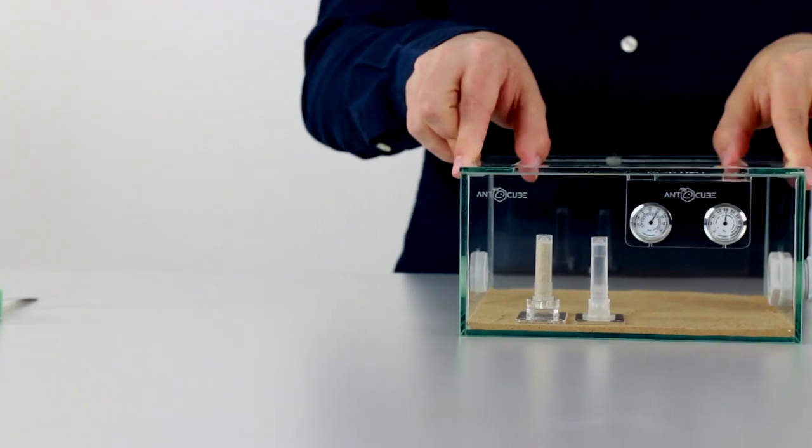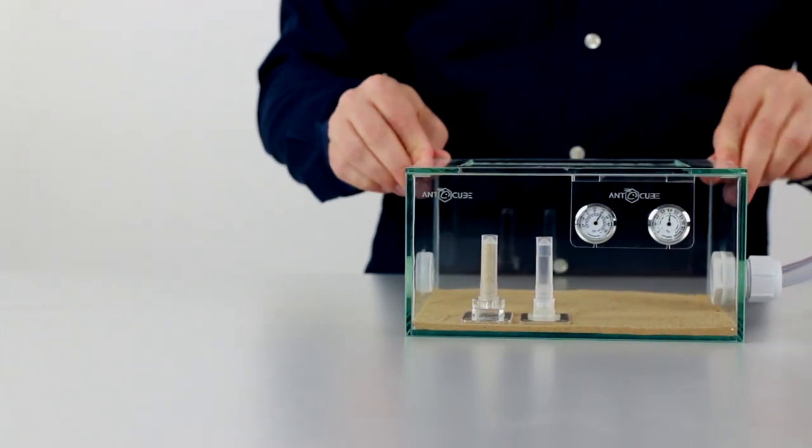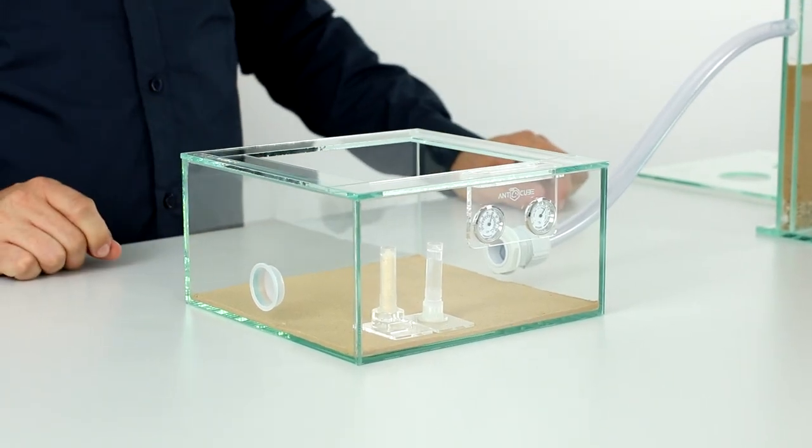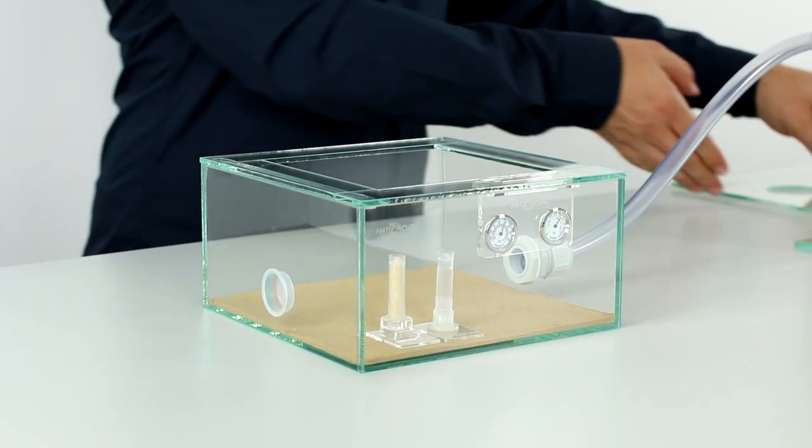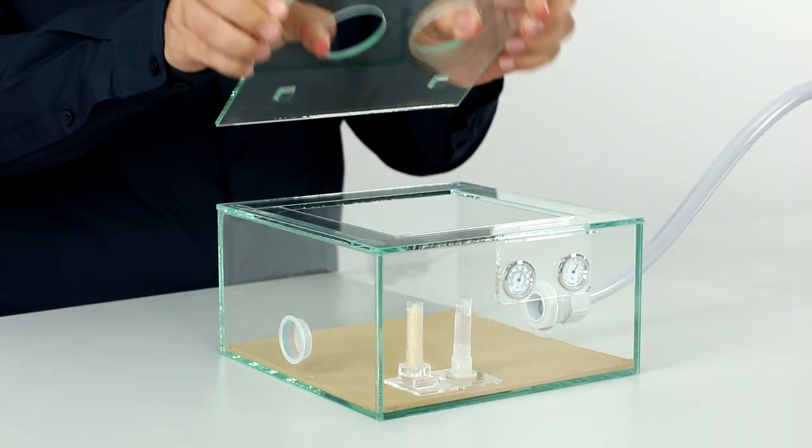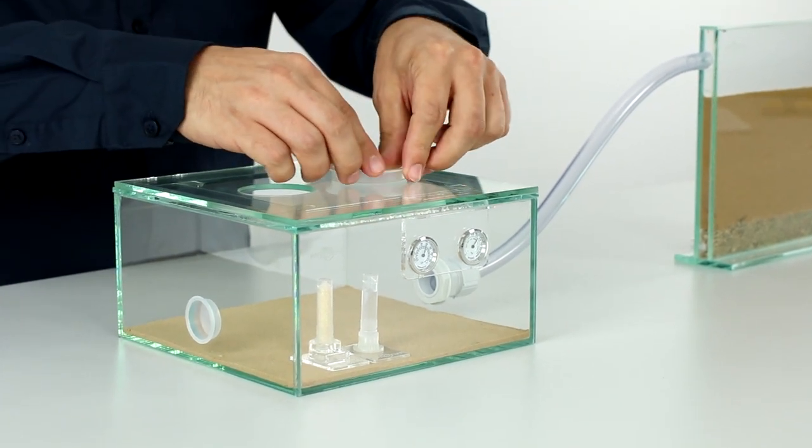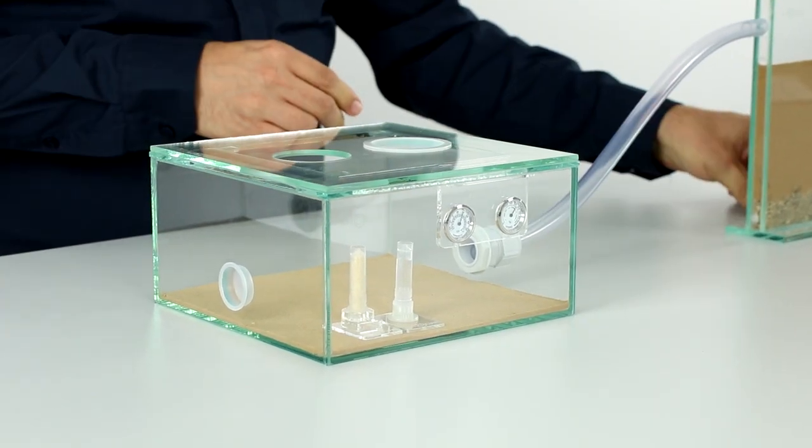Now we put the frame on the rubberized edge of the arena. Look again whether everything seals tightly. Theoretically the setup would already be safe now because the animals cannot escape. To be on the safer side we still have a glass cover where two interchangeable inserts are inserted. The grid insert provides ventilation.